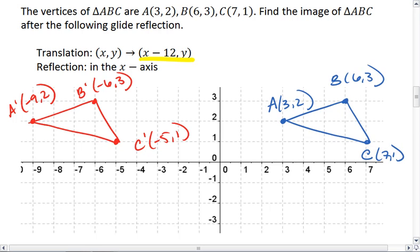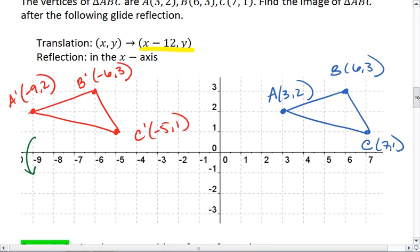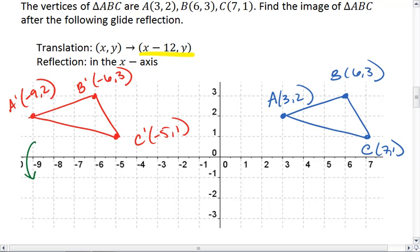Now we're going to reflect in the x-axis. A prime, which is negative 9, 2. Negative 9 stays the same, but the 2 changes its sign. So we get A double prime at negative 9, negative 2.